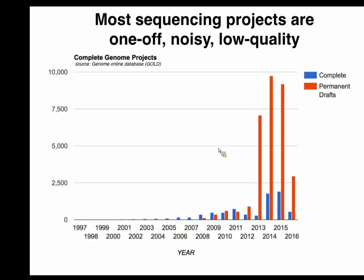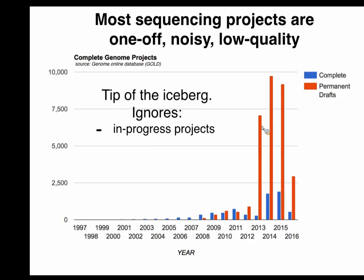If we look at the current state of affairs, it's rather concerning. If we look at this genome online database — the GoD database — we can see that most of the genomes deposited now are in permanent draft status, meaning people have no plan to improve them further. That massively dwarfs complete genomes. But that's really just the tip of the iceberg. There are also many projects still in draft, plus projects not even registered, increasingly initiated by individual labs.